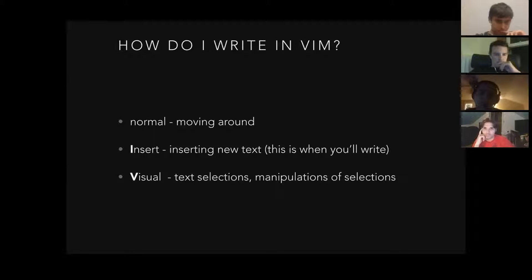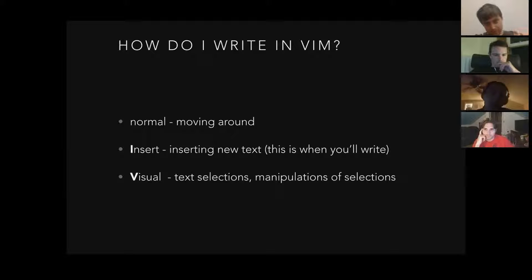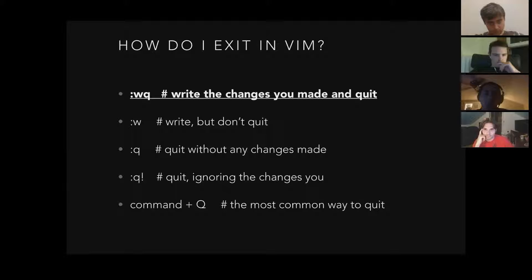How do I write in vim? There are three main modes. Normal, which is just moving around. Insert, which is inserting new text — that's how you write. And Visual, which is text selection and manipulation — it's like highlighting a bunch of text.